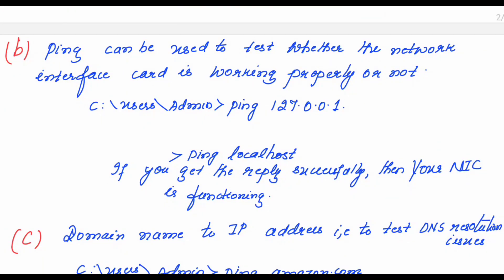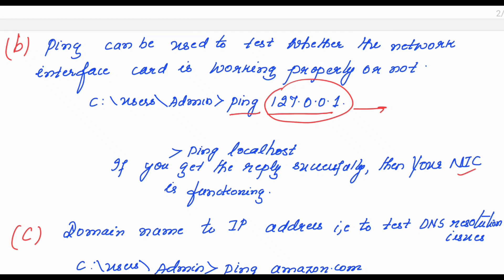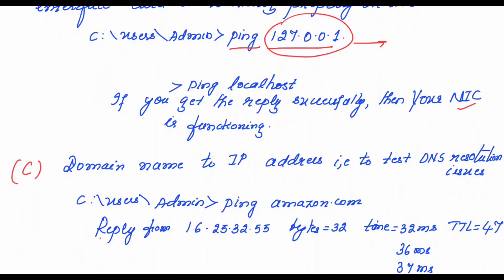Ping can also be used to test whether the network interface card is working properly or not. For that, you have to type ping followed by 127.0.0.1. This IP address is the loopback address. It will be sent to the PC itself. If you get the reply successfully, then your network interface card is functioning. Otherwise, it is not functioning properly.